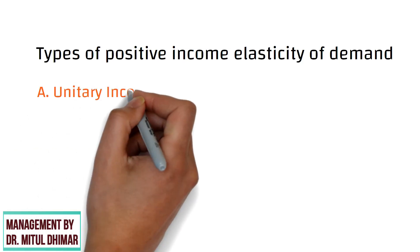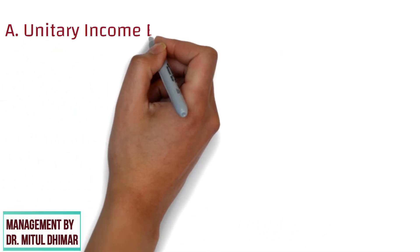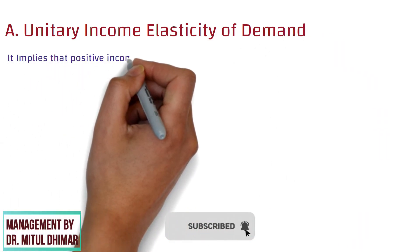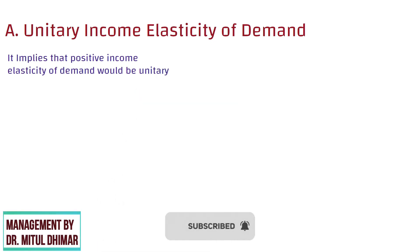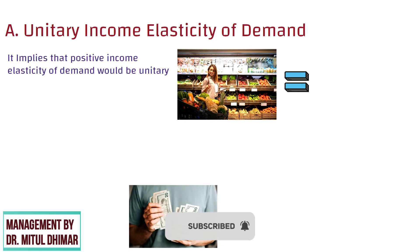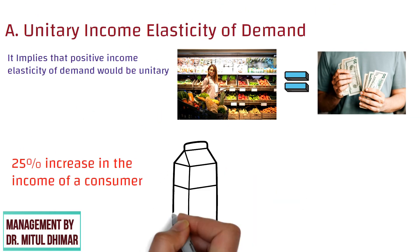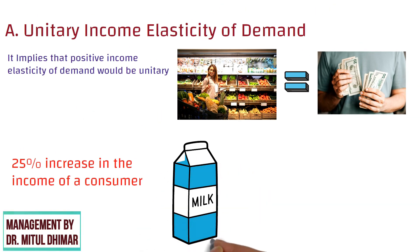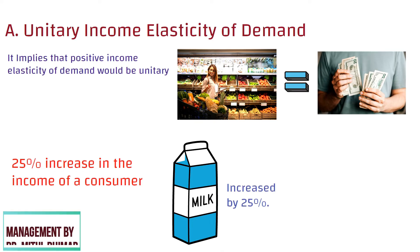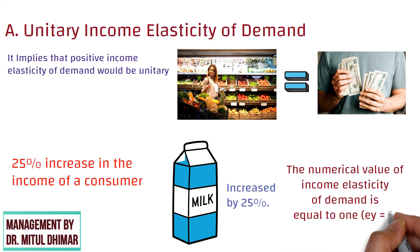The positive income elasticity of demand can be of three types. The first is unitary income elasticity of demand. It implies that positive income elasticity of demand would be unitary when the proportionate change in the quantity demanded is equal to proportionate change in income. For example, if there is a 25% increase in the income of a consumer, the demand for milk consumption would also increase by 25%. In such a case, the numerical value of income elasticity of demand would be more than 1.